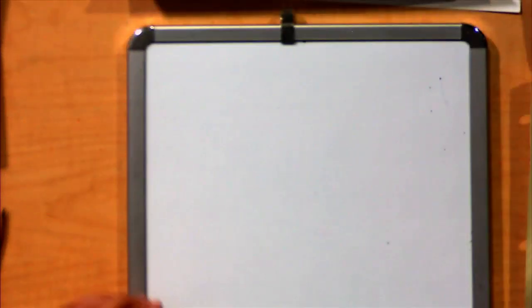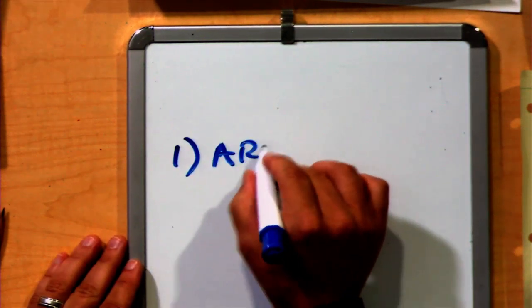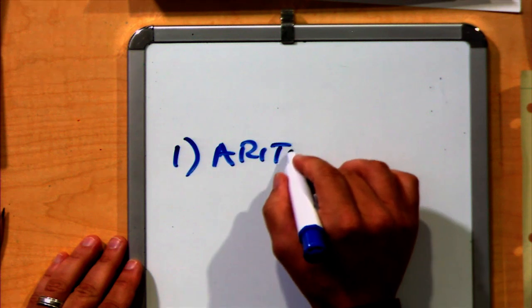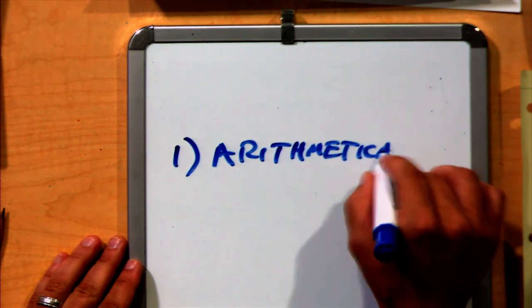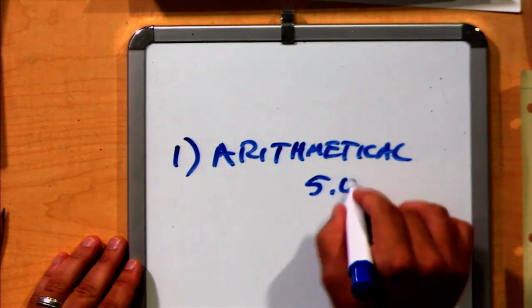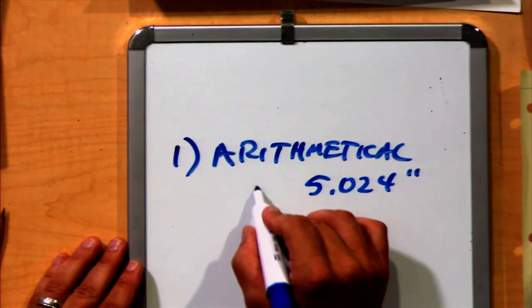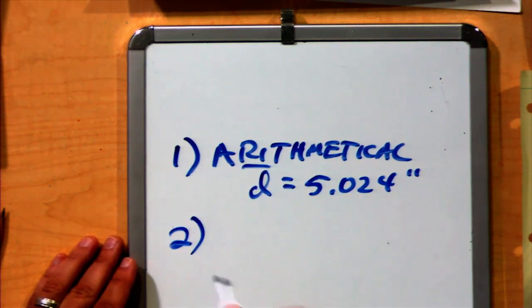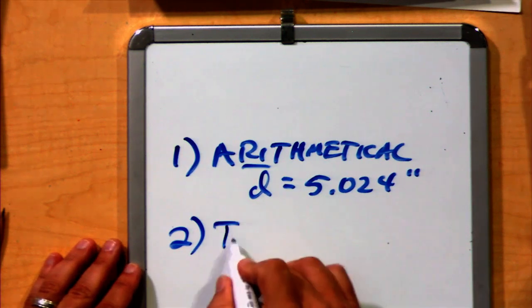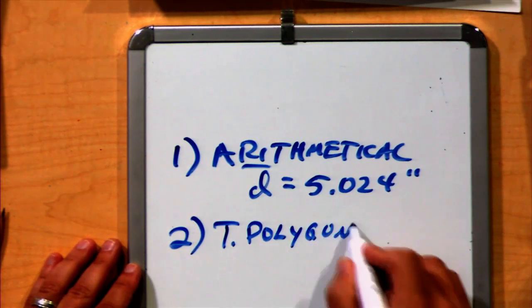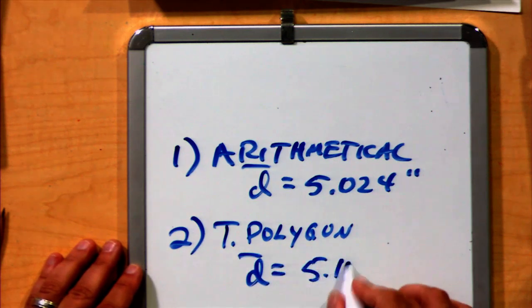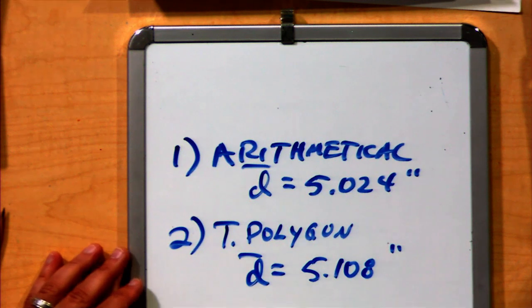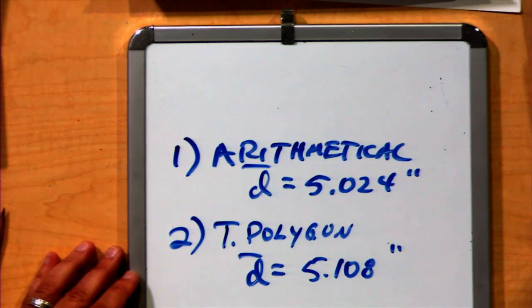For our three methods, we got the following values. Method one, using the arithmetical mean, we got 5.024 inches for our mean depth. For method two, Thiessen polygon, we got a mean value of 5.108 inches. And for our third method, the isohyetal method, we got an average depth of 5.072 inches.